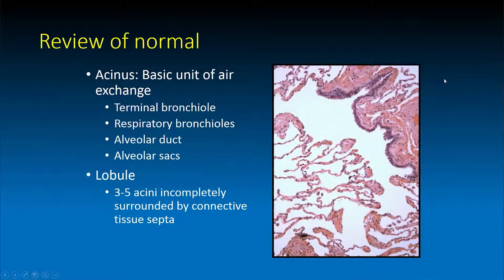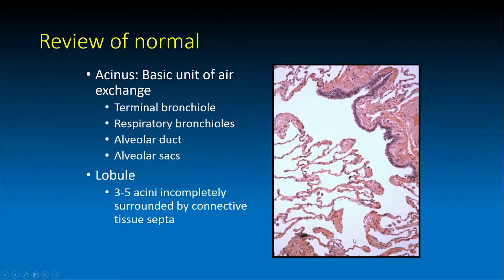Let's begin with the review of the normal architecture of the lung. The acinus is the basic unit of air exchange in the lung and is comprised of the terminal bronchiole that feeds into the respiratory bronchiole, as shown in this image. The respiratory bronchiole then feeds into the alveolar duct, which extends diagonally across this image, and from the alveolar duct we have a branching off of the alveolar sacs.